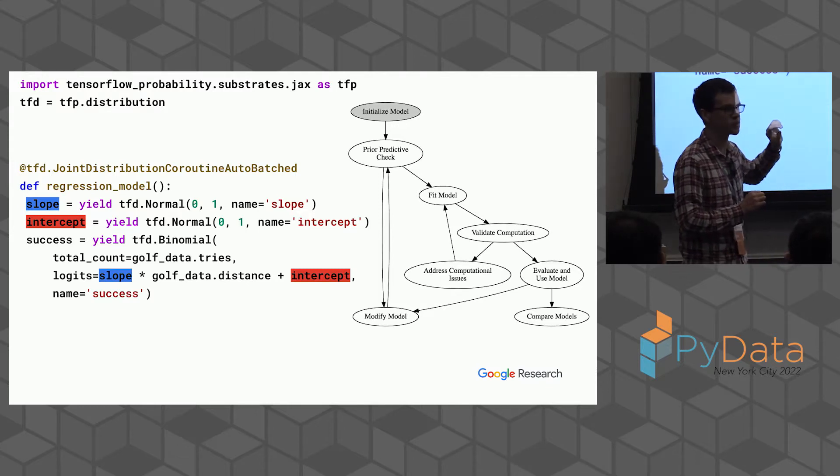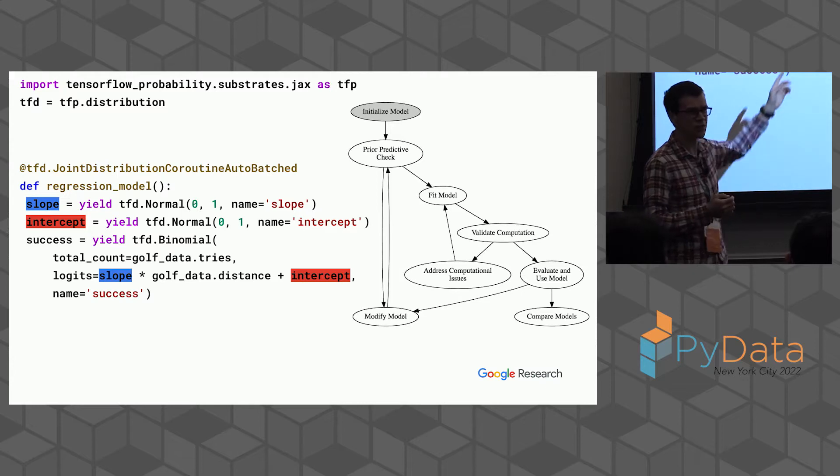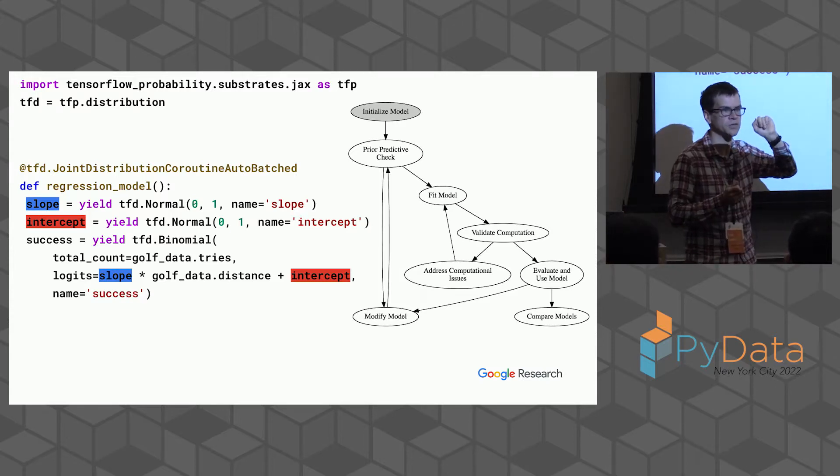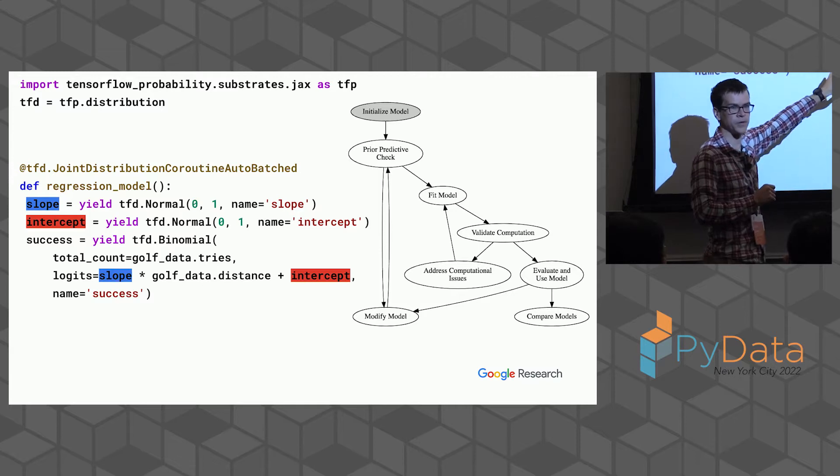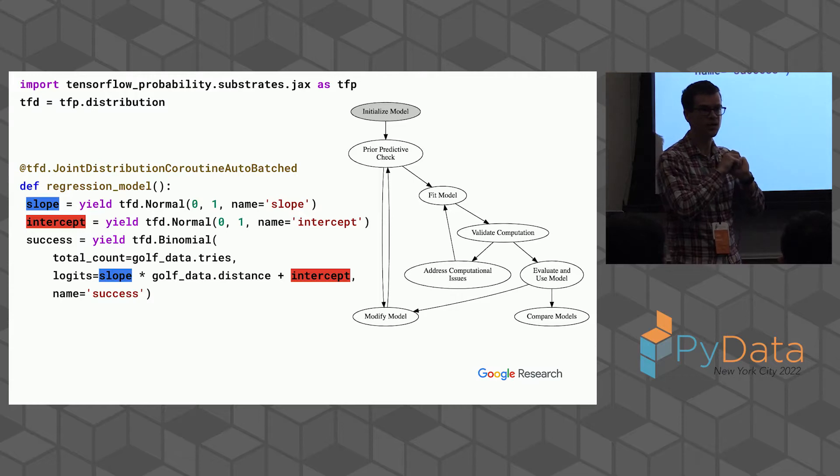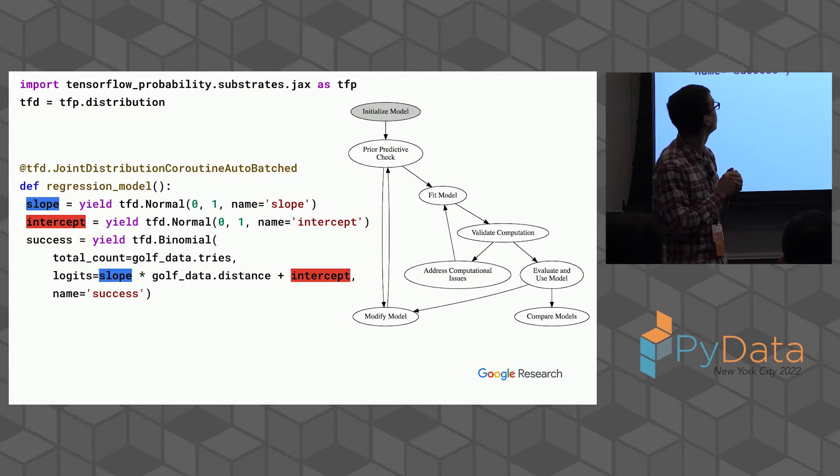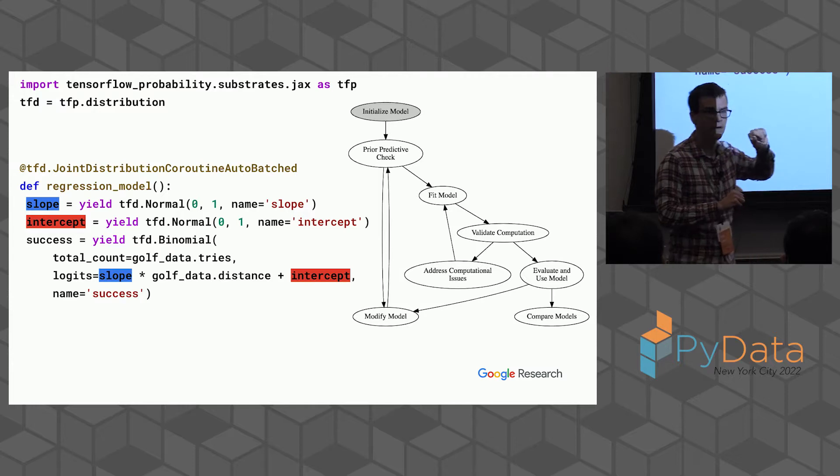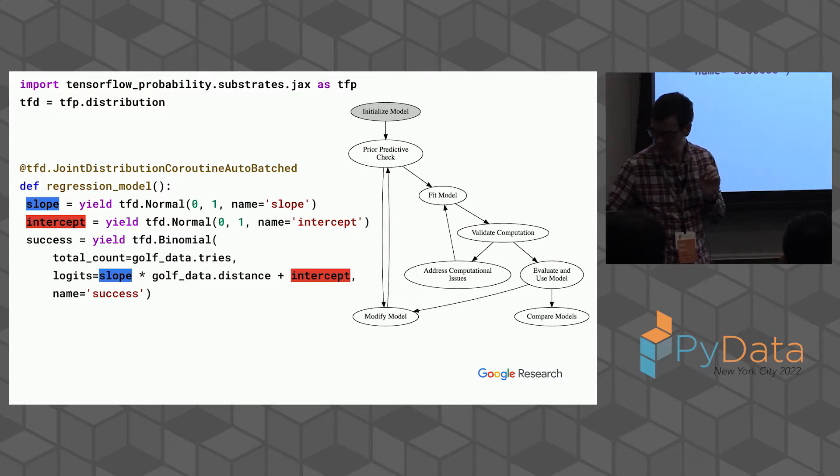This is how you write a model in TensorFlow probability. A lot of probabilistic programming languages look fairly similar. The things I want to highlight is that your random variables can be used just like your normal programming variables. We define this slope here as being a normally distributed random variable, same as intercept. And then later on, we can plug those in and use them, multiply them by other numbers.